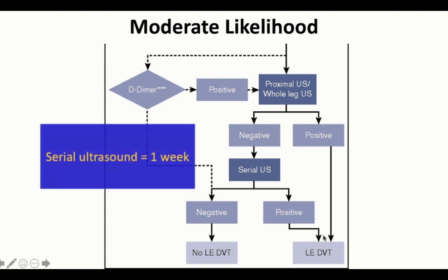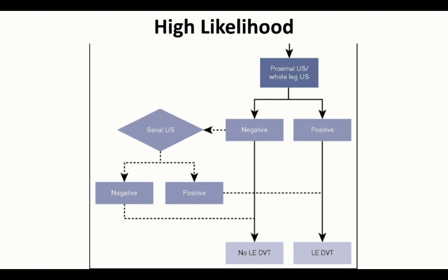Serial ultrasound means repeat in about a week — not 24 or 48 hours. These patients can be scheduled for a standard vascular lab ultrasound during regular business hours. If you've done a quality proximal leg ultrasound and the patient is moderate or high likelihood, a serial study can be done sometime in the next week or so. For high-likelihood patients the decision-making is really not different from moderate-likelihood: if the study is positive at any point, treat for DVT; if negative on initial and serial, no DVT.